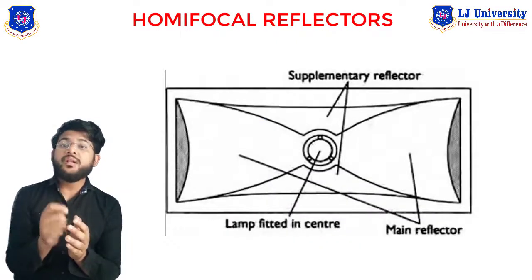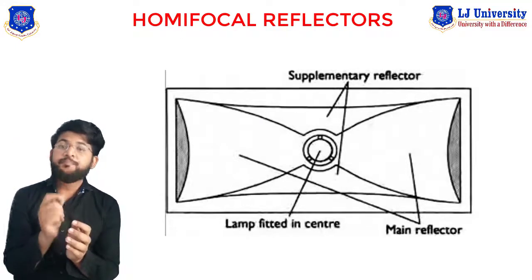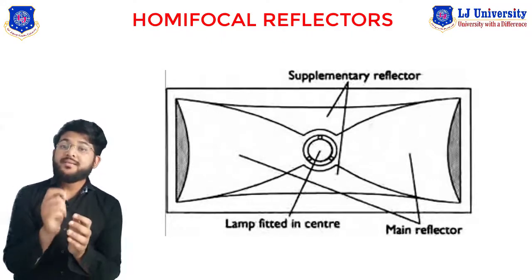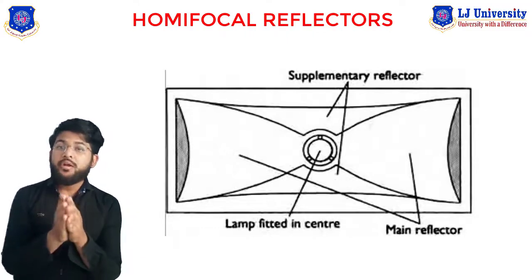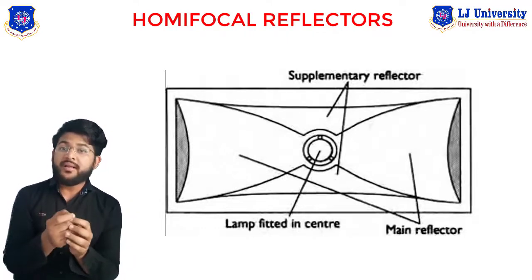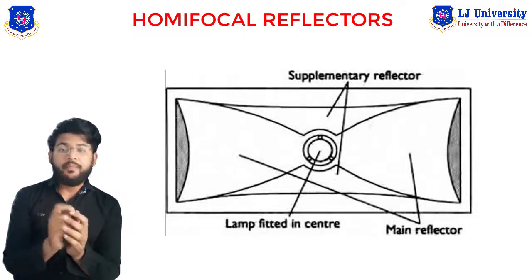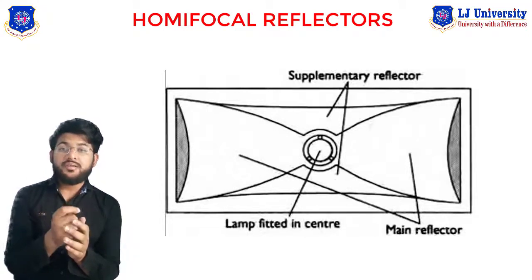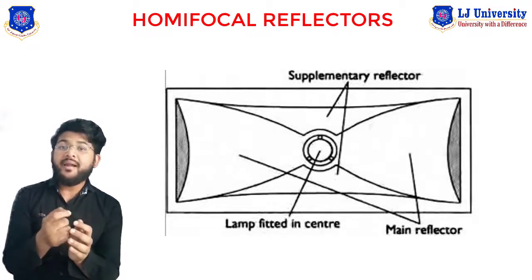The third type is the homifocal reflector. A homifocal reflector is made up of a number of sections, each with a common focal point. This allows a shorter focal length and hence the overall depth of the light unit decreases. The effective luminous flux is also decreased, and it can be used with a twin filament bulb to give a dipped and a main beam. The light from the main reflector gives normal long-range lighting, and the auxiliary reflectors improve near-field and lateral visibility.